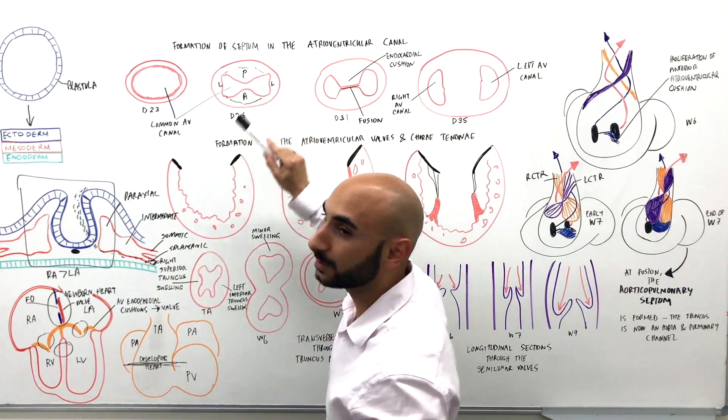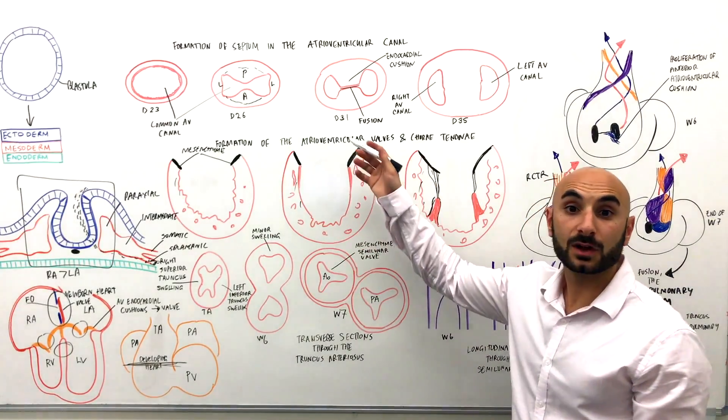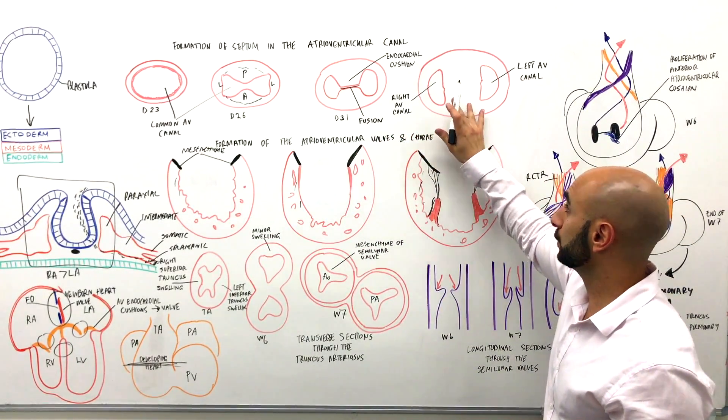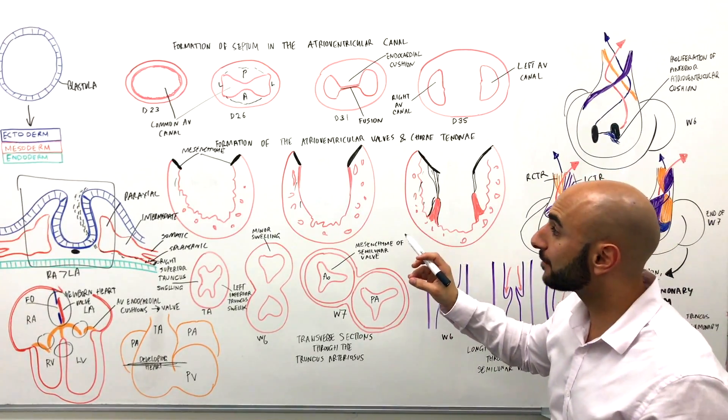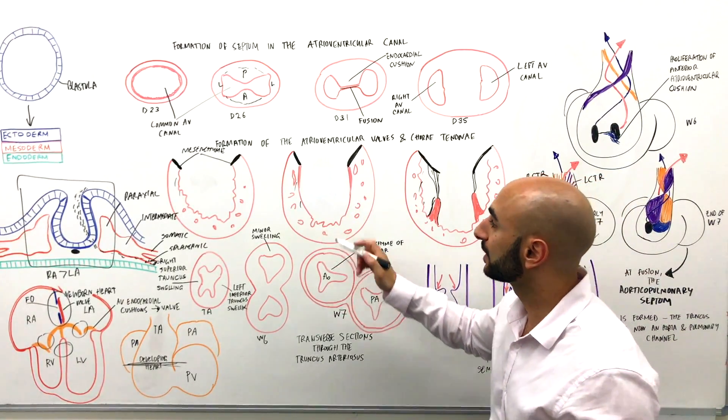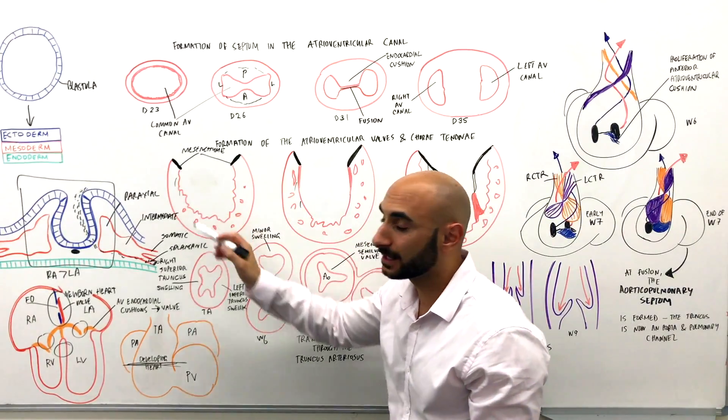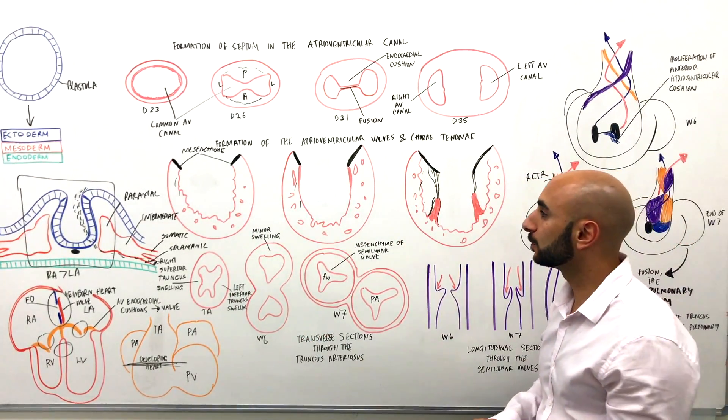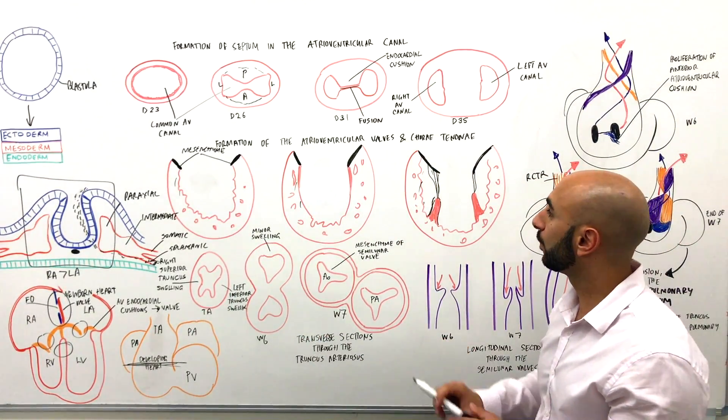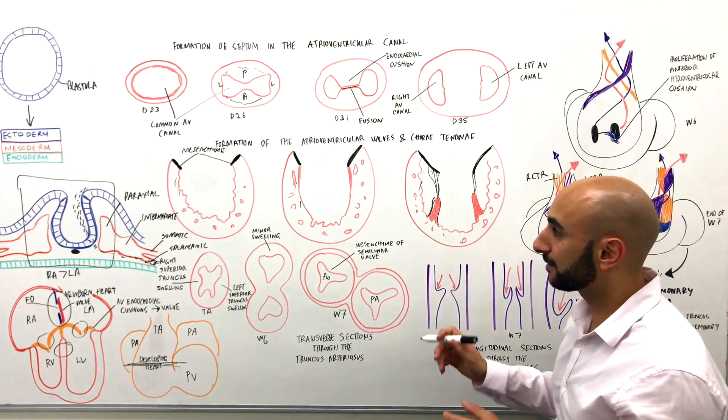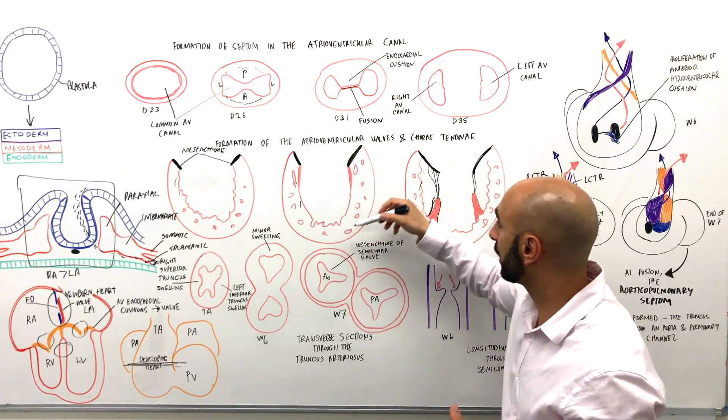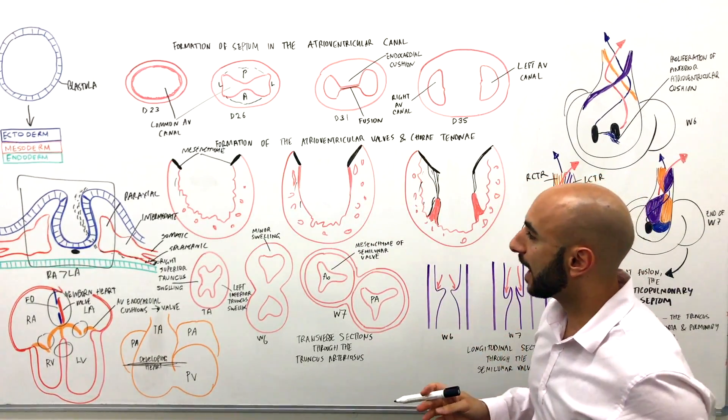So after the atrioventricular endocardial cushions fuse, there's a local proliferation of mesenchymal tissue at the orifice, and that's represented here in black. And that will become the valve. It'll become either one of these or either part of the bicuspid or tricuspid valves.